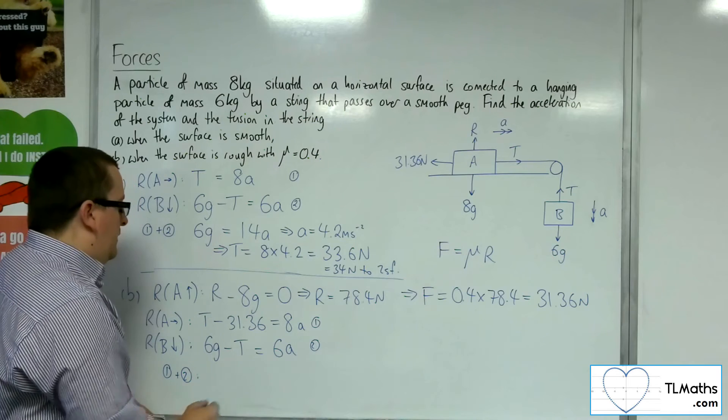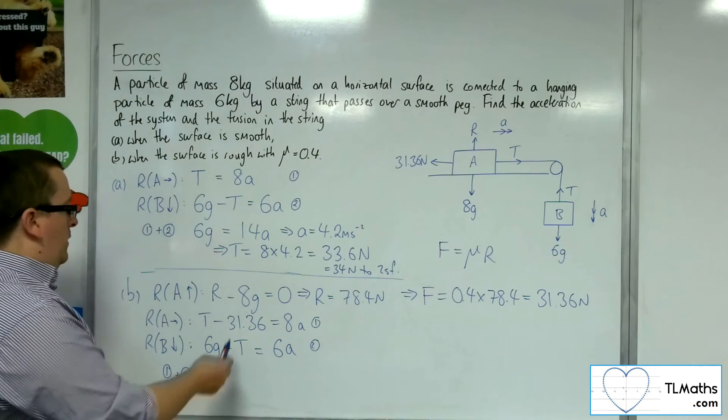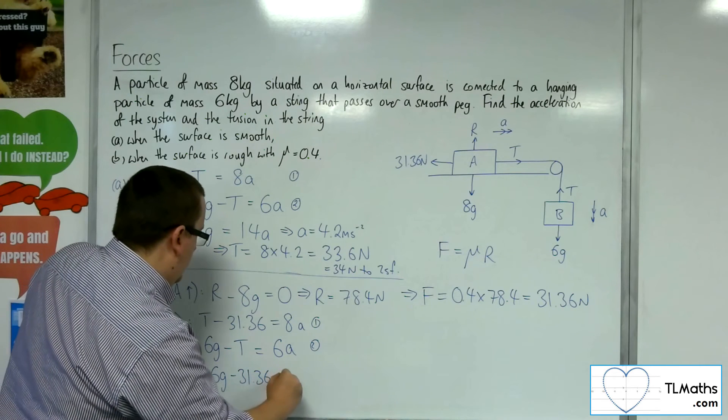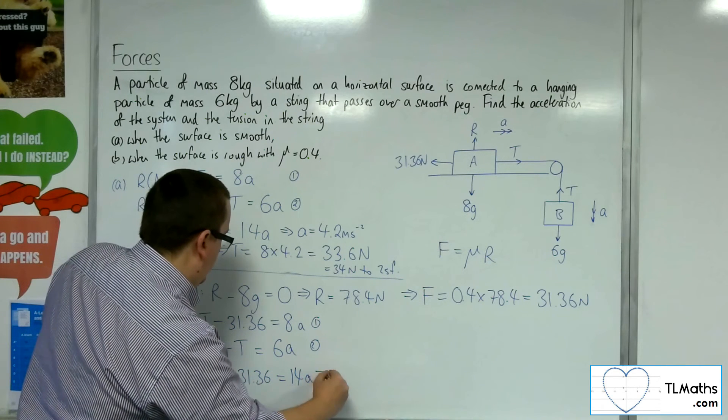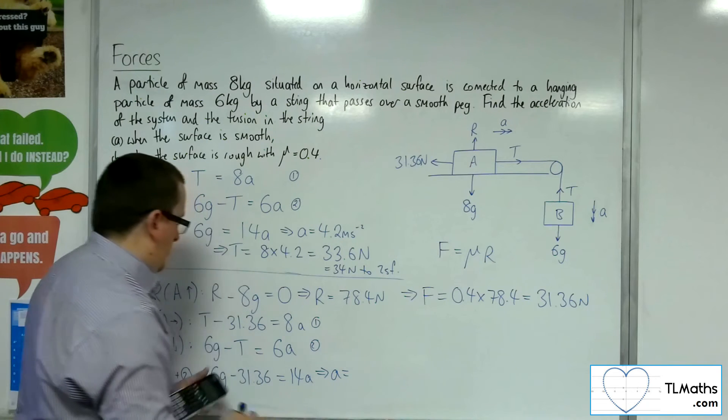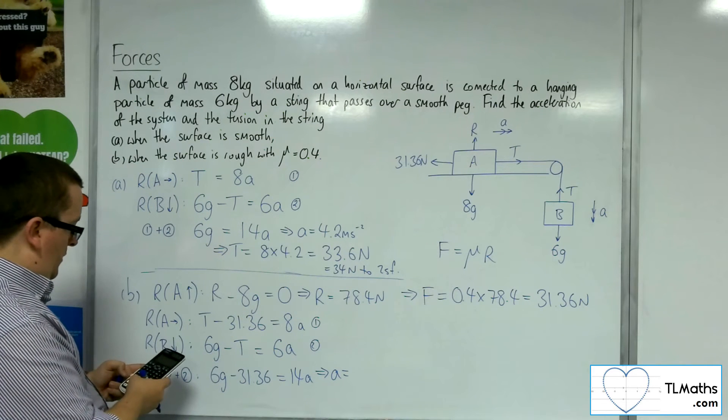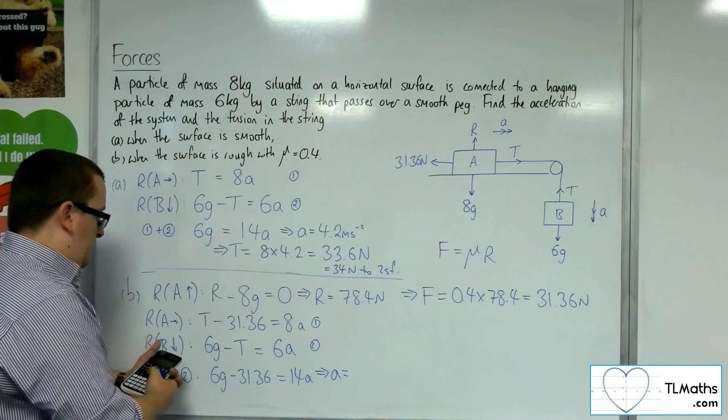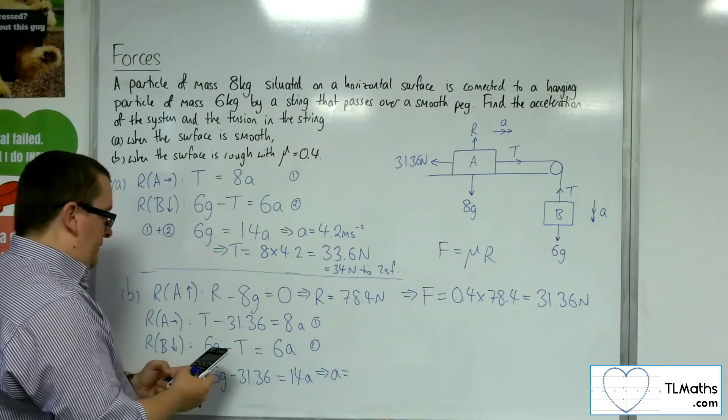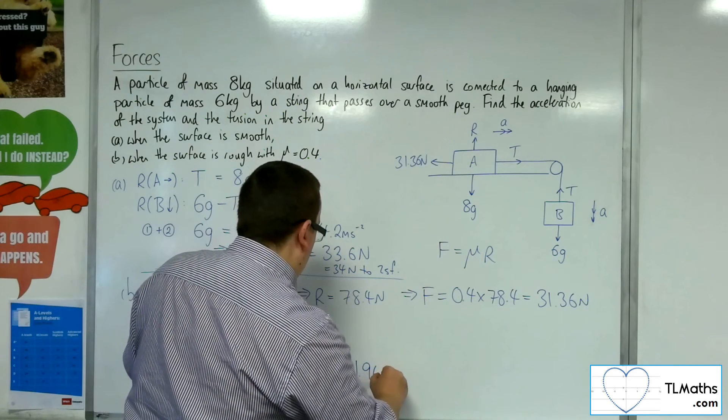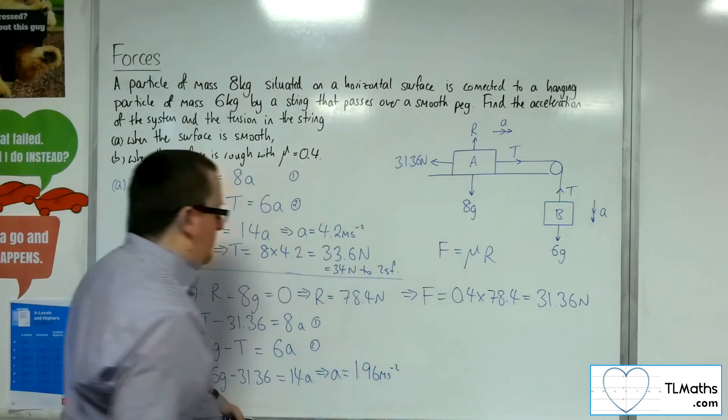We've got 6g, take 31.36, is equal to 14a. So, 6 lots of 9.8, take away 31.36, gets us 27.44, divide that by the 14, and we get 1.96 metres per second per second.